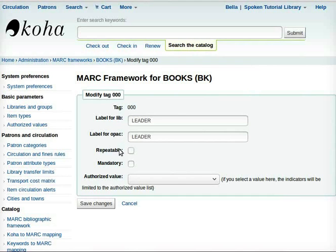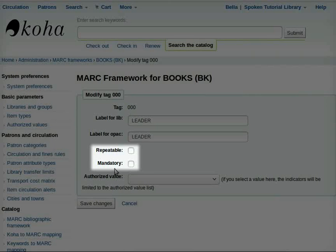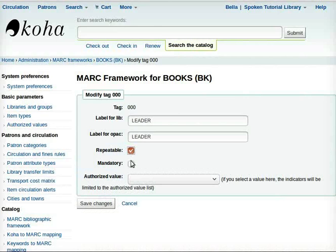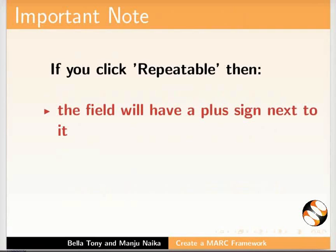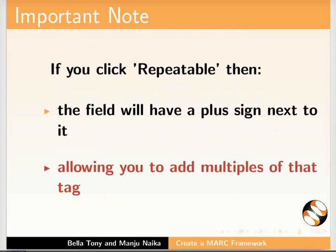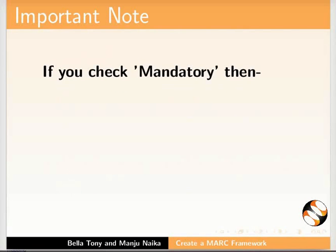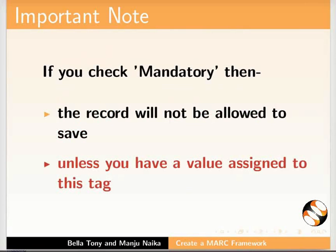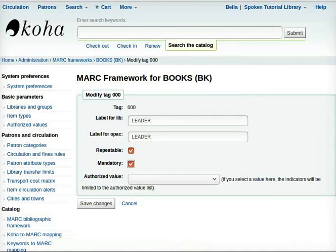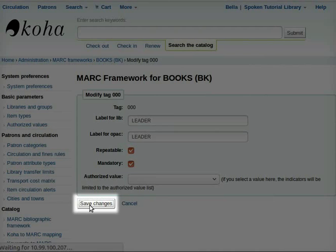As per your requirement, check the checkbox for Repeatable and Mandatory. I will check both these options. Note that if you click Repeatable, the field will have a plus sign next to it in Cataloging. This is basically required for more than three authors or editors, allowing you to add many more details of the same tag. If you click Mandatory, the record will not be allowed to save unless you allocate a value to this particular tag. Let's go back to the Koha interface.